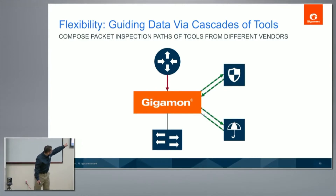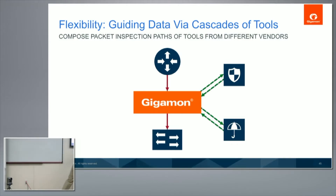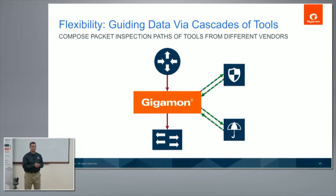The third use case is cascading inline arrangements — a classic setup where traffic first goes through a firewall, then an IPS, then a web security tool. With Gigamon, traffic goes first through the IPS, then through the DLP in this example. We decrypt it, send it through the first tool — if that says it's okay, we send it through the second, and if that says it's okay, we re-encrypt and send it back to the fabric. If one tool goes down, traffic still flows through the remaining tools.